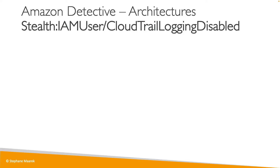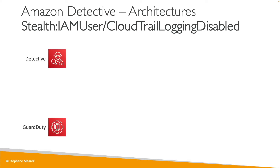Here is an example architecture that can come up in the exam for Amazon Detective. We have Detective and also GuardDuty, and we want to understand how and why CloudTrail would be disabled. Someone goes in and disables CloudTrail, GuardDuty can generate a finding for it, and any findings from GuardDuty will end up in Amazon Detective.